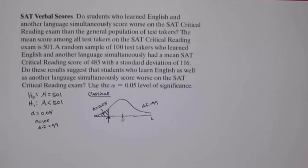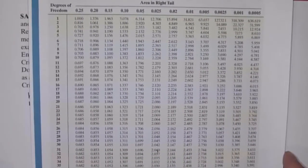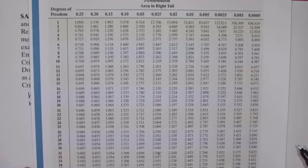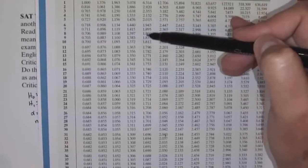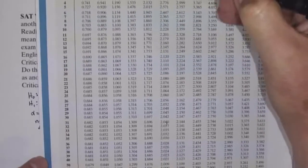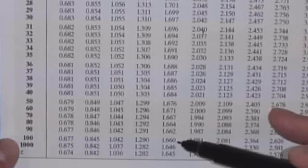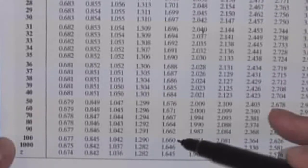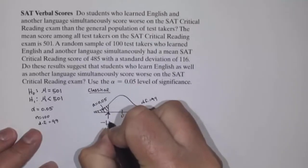We can determine the critical value using the inverse t command on a calculator, the t calculator in StatCrunch, or the t table from the appendix of the textbook. I'm going to use the t table. The table only gives positive values, but by symmetry, using the 0.05 area in the right tail gives the same magnitude — just negative in the left tail. Going down the 0.05 column, we don't have a row for 99 degrees of freedom, only 100 degrees of freedom, which gives a critical value of 1.660. So our critical value is negative 1.660.